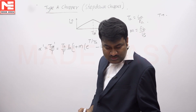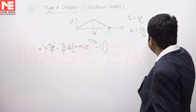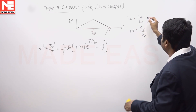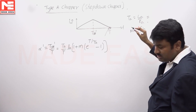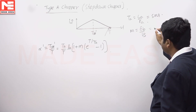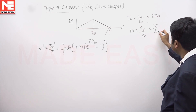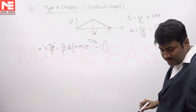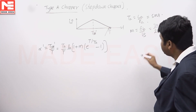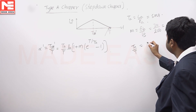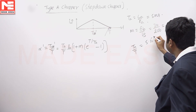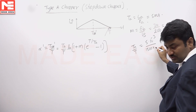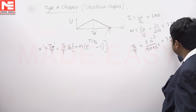Substituting all those values in this equation: T_A value is 5 — the L by R ratio. After substituting L and R you will get 5 milliseconds. E_b by V_s value is 30 by supply voltage 200 volts, giving 3 by 20, which is 0.15. The remaining parameter T_A by T: T_A value is 5 × 10^−3 by 10^−6. If you calculate this you will get 3.33.